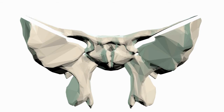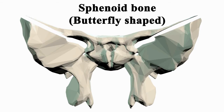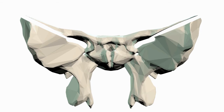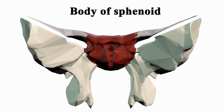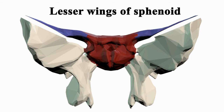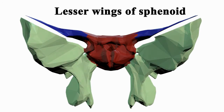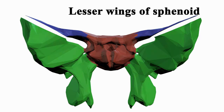The sphenoid bone is said to be butterfly shaped. It is the center and the main bone of the cerebral part of the skull. It consists of the body of sphenoid, lesser wings of sphenoid, and greater wings of sphenoid.